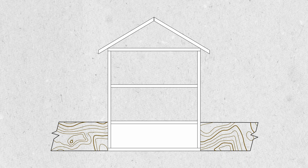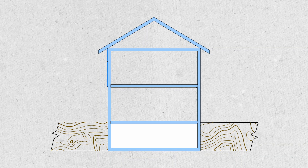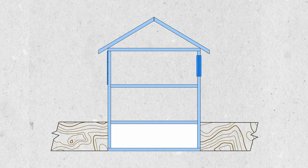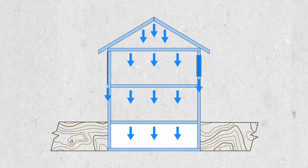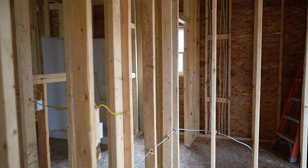Dead load is load applied to the structure on a permanent basis. Think about things like self weight — the beams in the structure, concrete flooring, cladding, windows, and other elements you can't easily move in and out. These are really well-defined; you know what you've applied to the structure. Permanent items such as MEP or partition walls also fall into a permanent load factor, giving very low uncertainty.